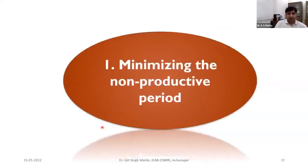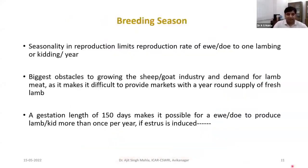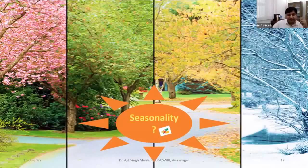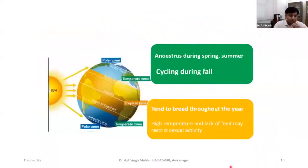Talking about minimizing the non-productive period — first we discuss breeding season. Seasonality in sheep and goat limits the reproduction rate; we are not able to get more than one crop per year in an animal which has a gestation period of five months only. Most people say these are seasonal breeders, but seasonality depends on the location or climate. States like Rajasthan to Andhra and Telangana are very close to the equator, and there is no seasonality at all.